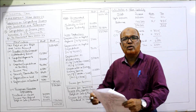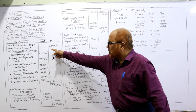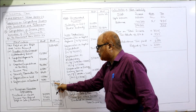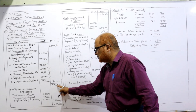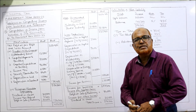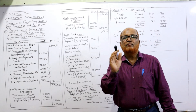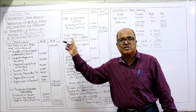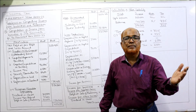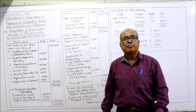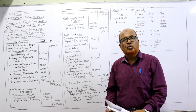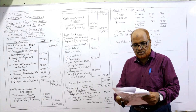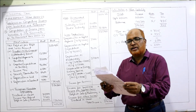We have seen all the debit items; whichever are disallowed we have added back. Take the total of all these items — you get ₹1,79,400 added back. So ₹3,50,900 plus ₹1,79,400 = ₹5,30,300. From this we deduct those incomes which are credited to the profit and loss account but are not taxable under business income — they are taxable separately under other heads of income. Those incomes are deducted as incomes chargeable to tax separately.